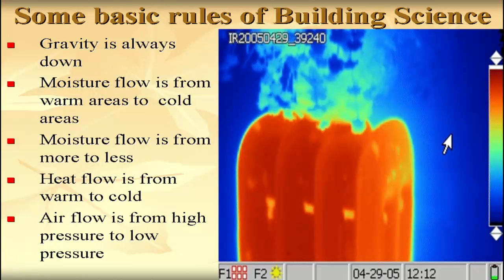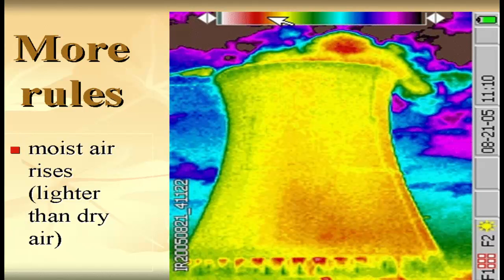Here are a few basic rules of building science: gravity is always down; moisture flow is from warm areas to cold areas; moisture flow is from more to less; heat flow is from warm to cold; air flow is from high pressure to low pressure. Additionally, moisture rises because it's lighter than dry air — that's why we have clouds and rain. Moist air rises in your house as well.